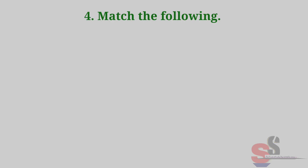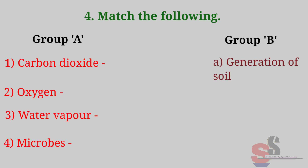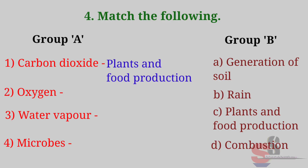Question 4: Match the following. Correct answers: 1. Carbon dioxide — plants and food production. 2. Oxygen — combustion. 3. Water vapour — rain. 4. Microbes — generation of soil.